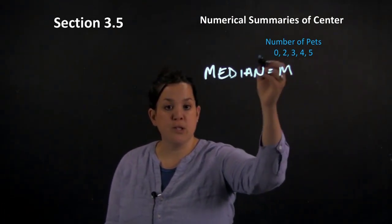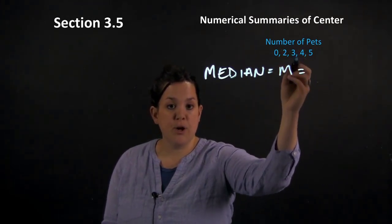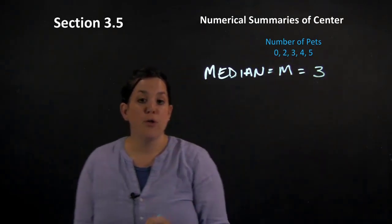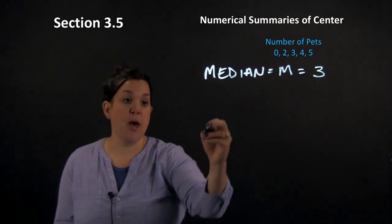So here, because our data is in order and because we have an odd number of observations, we can just simply locate our center, which is going to be three. So there's five observations, so three is going to be the middle of that data set.